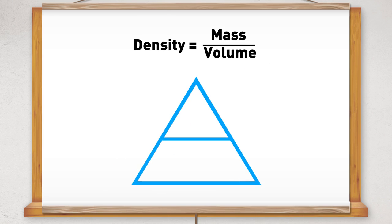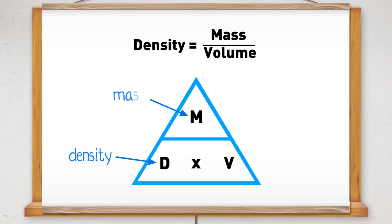We can use a formula triangle to help us calculate the density, mass, or volume. D equals density, M equals mass, V equals volume.